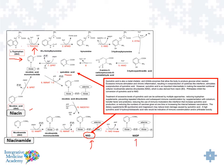NADP is interesting because it's linked to the glucose metabolic pathway called glycolysis through a pathway called the pentose phosphate pathway, which helps regenerate glutathione. So quinolinic acid and tryptophan both sit at a biochemical crossroads.